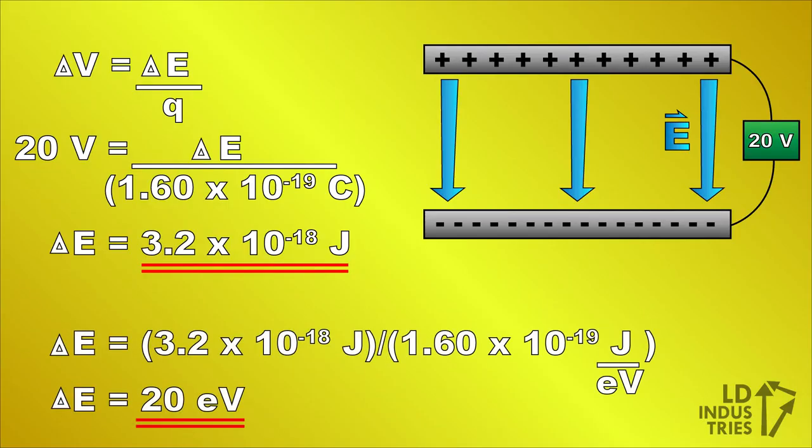So what is that kinetic energy in electron volts? We need to take this energy in joules and divide it by the conversion factor of 1.60 times 10 to the negative 19 joules per electron volt. This gives us 20 electron volts. But wait, that's the exact same number we had when we started.